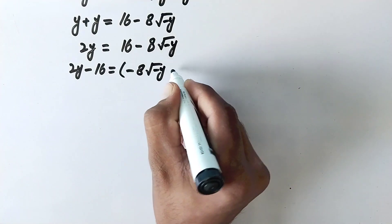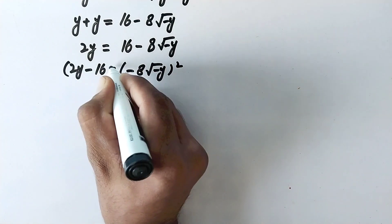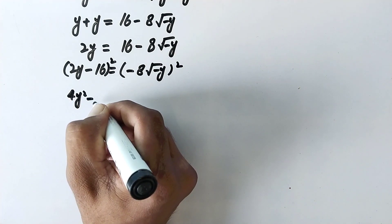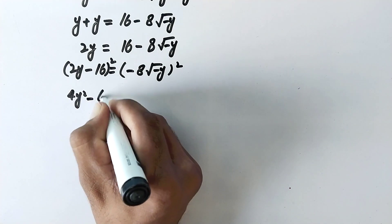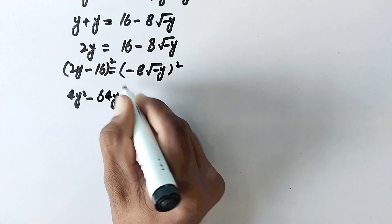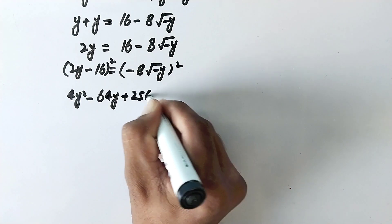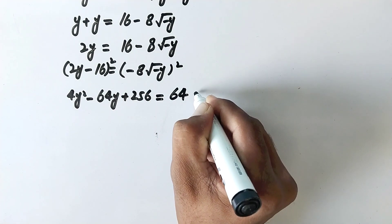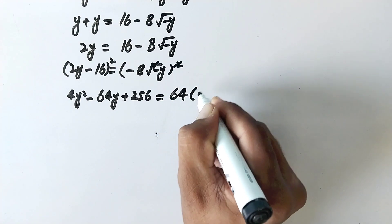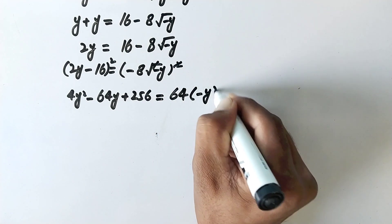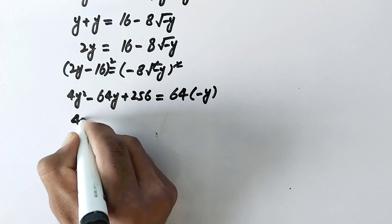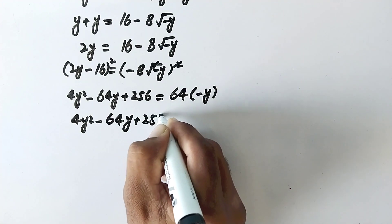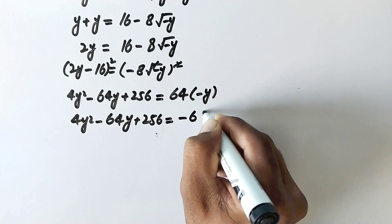Again we will take square on both sides of the equation. It will be 4y squared minus 64y plus 256 is equal to 64 times negative y, which gives 4y squared minus 64y plus 256 is equal to negative 64y.